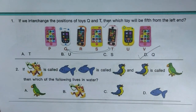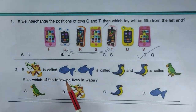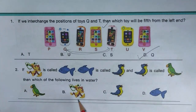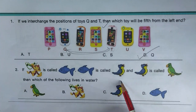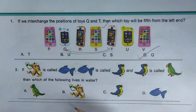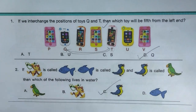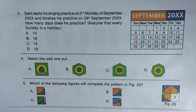Next question: if monkey is called fish, fish is called bird, and bird is called parrot, which of the following lives in water? We know fish lives in water, but here fish is called bird — specifically the yellow bird. So option C, yellow bird, is the answer.